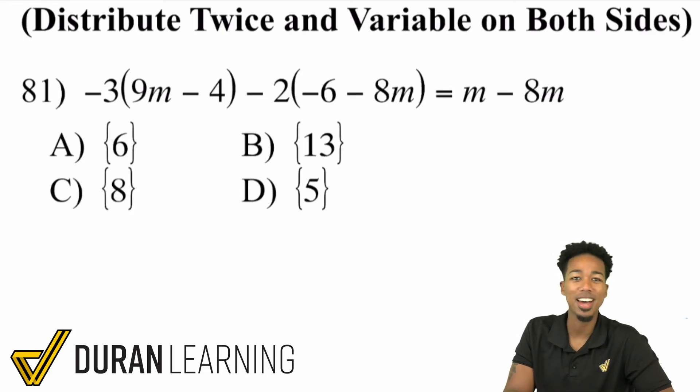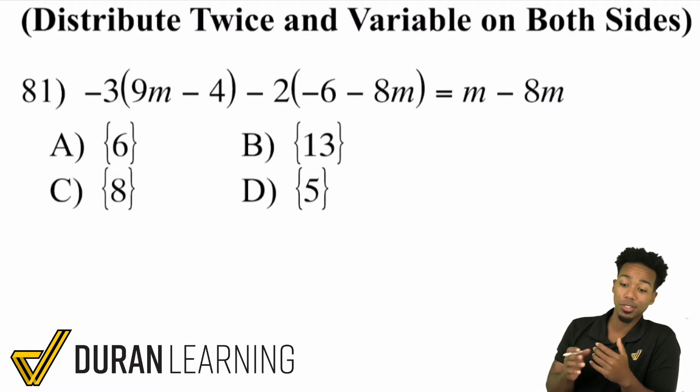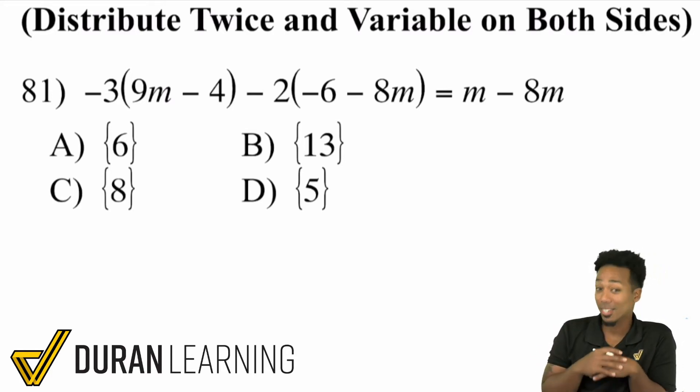Alright, here it is, part five, the final boss. We're looking at solving multi-step equations with the nastiness thrown at you here. We've got parentheses, we've got variables on both sides, we've got simplification that's needed. There's a lot going on here.